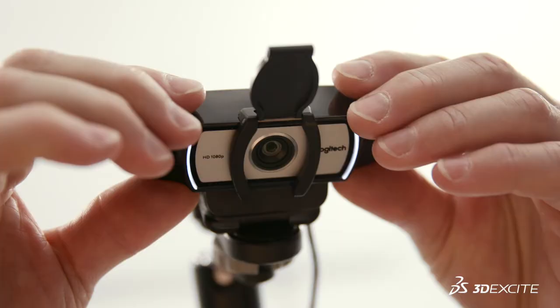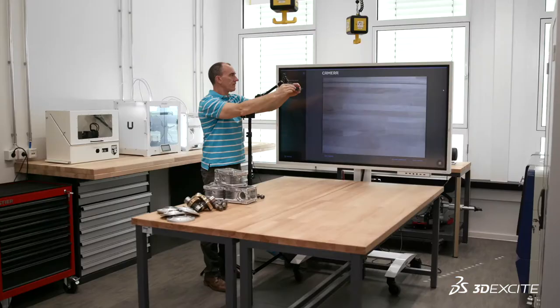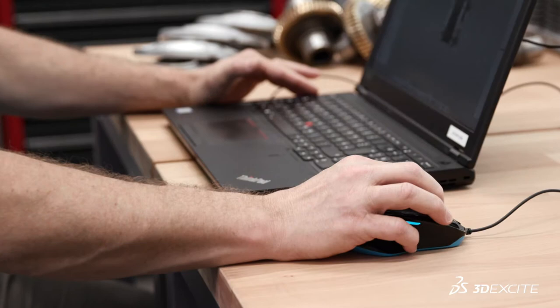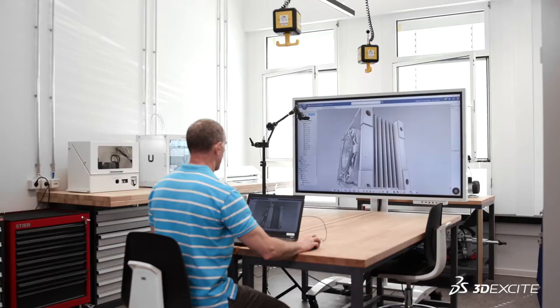Computer vision is used today in a number of different contexts. One example would be quality assurance, where cameras can capture not only cosmetic defects but also the correct installation of components in complex products. Another use case is the identification of spare parts for replacement on complex machinery, especially in the field where access to computers may not be possible.